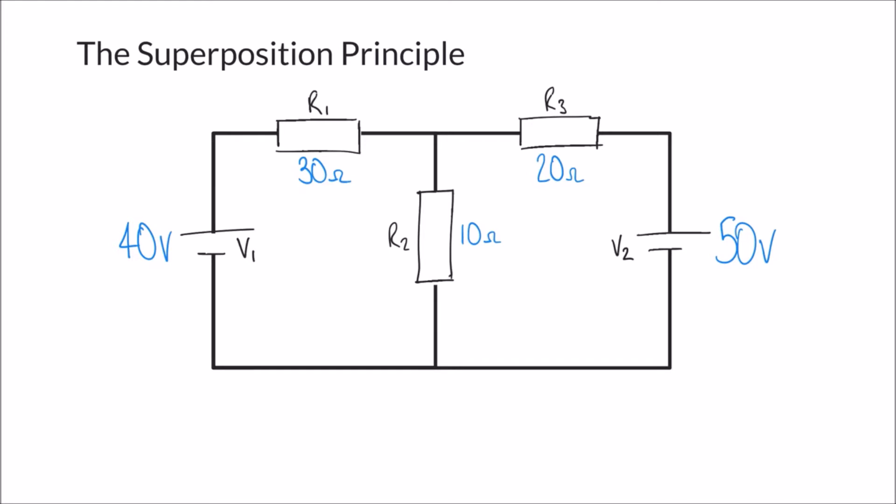Welcome to this video on the superposition principle. In previous videos we've looked at some DC theorems such as the potential divider rule and the current divider rule, and resistors in series and parallel. But all the examples so far have only involved one power source. Now in this example we have two cells in this circuit, marked V1 and V2, and having two cells gives us two sources of power, which makes things a little bit more difficult.